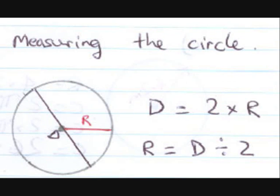So we can measure the circle by saying the diameter equals two times the radius. In other words, D equals two times R. Or, therefore we know that R equals D divided by two.